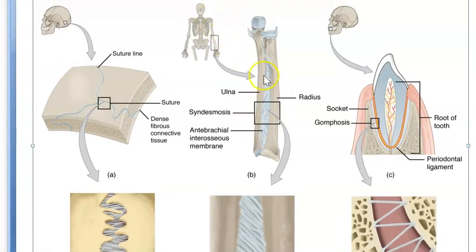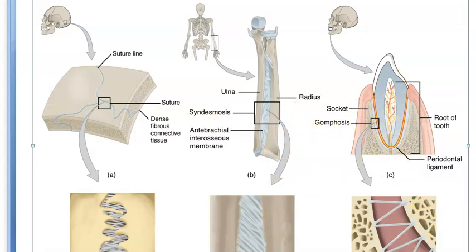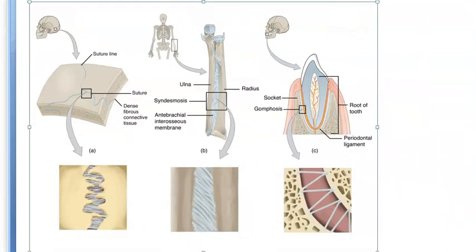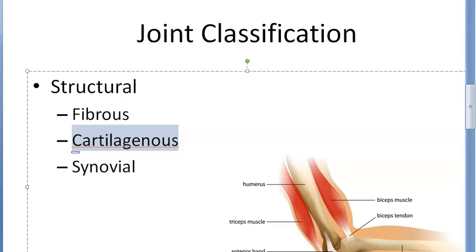Look at this - ulna and radius. Between the ulna and radius there is some joint - that is syndesmosis. And then you have gomphosis - the tooth. So will your tooth move? No, it won't move. So that is another fibrous joint.